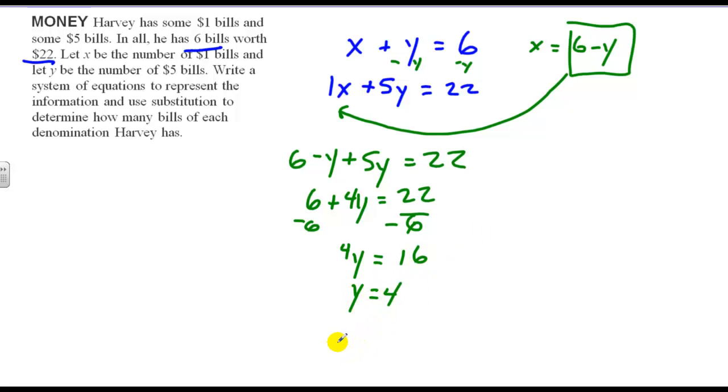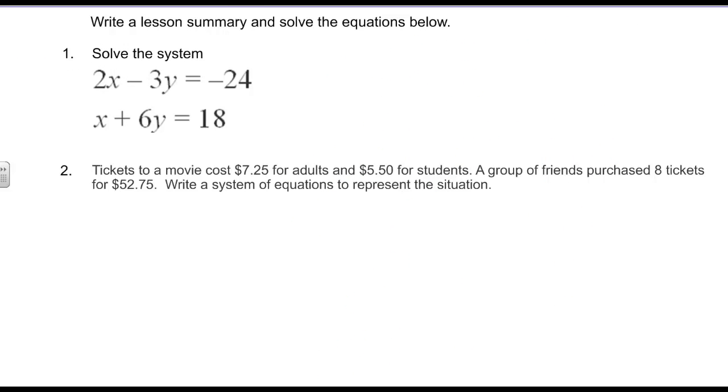If y is equal 4, I have x equals 6 minus y or 4, which means x equals 2. That means 2 and 4 is my ordered pair, which means I have 2 $1 bills and 4 $5 bills, which makes a total of $22, as you can see. And that's all we've got.